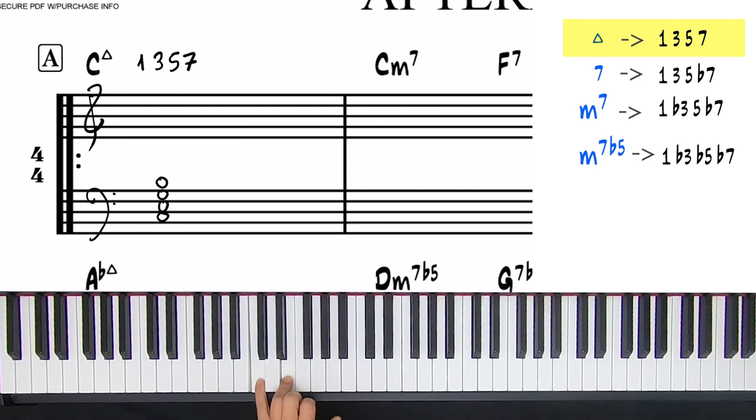So is C to E a major 3rd? Well yes it is. Then I don't need any accidentals on the E. C to G is a perfect 5th and C to B is a major 7th. No accidentals needed for this chord.